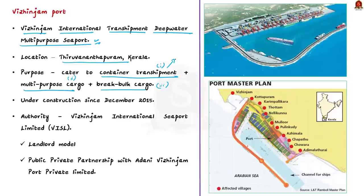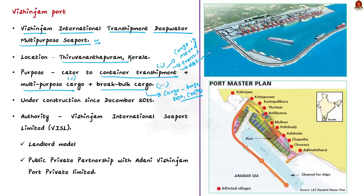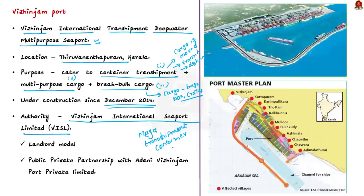The port is still under construction, which started in December 2015. After operationalization, it will become India's first mega transshipment container terminal — an ambitious project of the Kerala government, implemented through a special purpose government company called Vizhinjam International Seaport Limited (VISL), fully owned by the Kerala government. The port is being constructed in a landlord model with a public-private partnership component. Under this model, the port authority acts as a regulatory body and landlord, while private companies handle cargo operations.